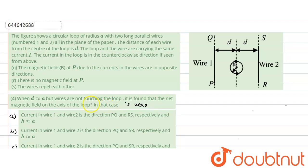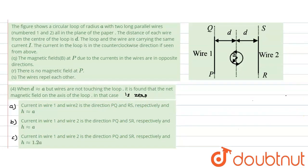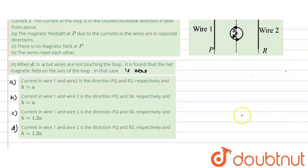It is found that the net magnetic field on the axis of the loop is zero. In that case, the current in wire one and wire two are in directions p, q and r, s respectively. We need to find the direction of the current and the relationship between h and a.